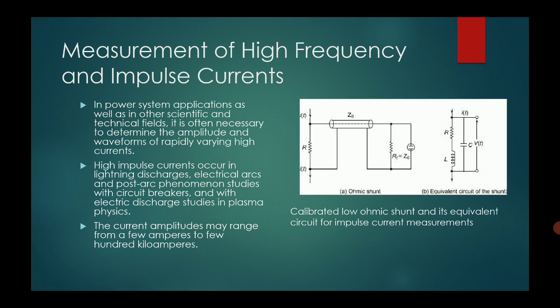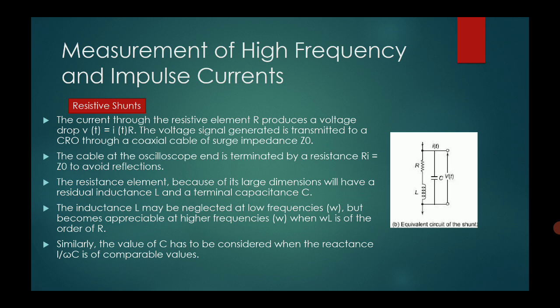Moving to measurement of high frequency and impulse currents. On the right-hand side we have a calibrated low ohmic shunt and its equivalent circuit for impulse current measurement. In power system applications as well as other scientific and technical fields, it is often necessary to determine the amplitude and waveform of rapidly varying currents. High impulse currents occur in lightning discharges, electrical arcs, post-arc phenomena studies with electrical breakers, and electric discharge studies in plasma physics. Current amplitudes may range from a few amperes to a few hundred kiloamperes.